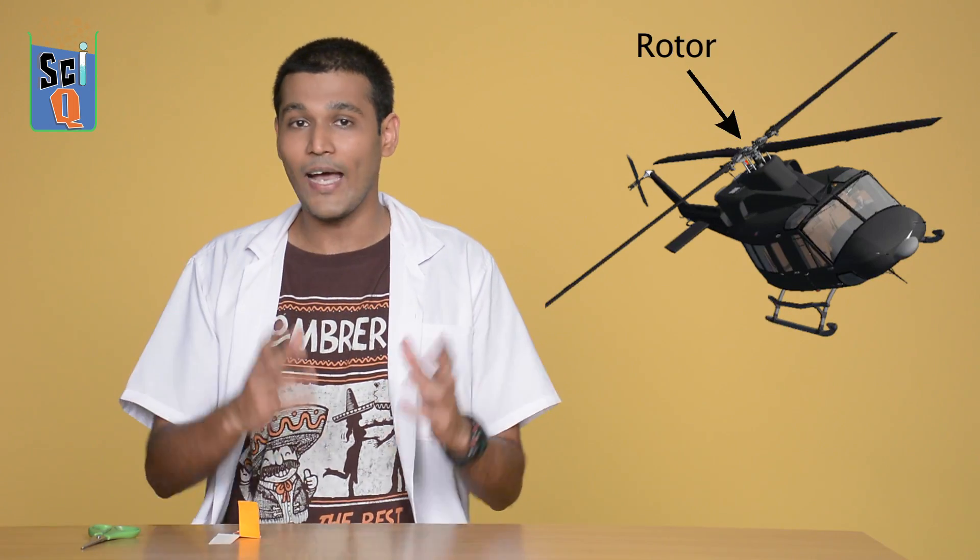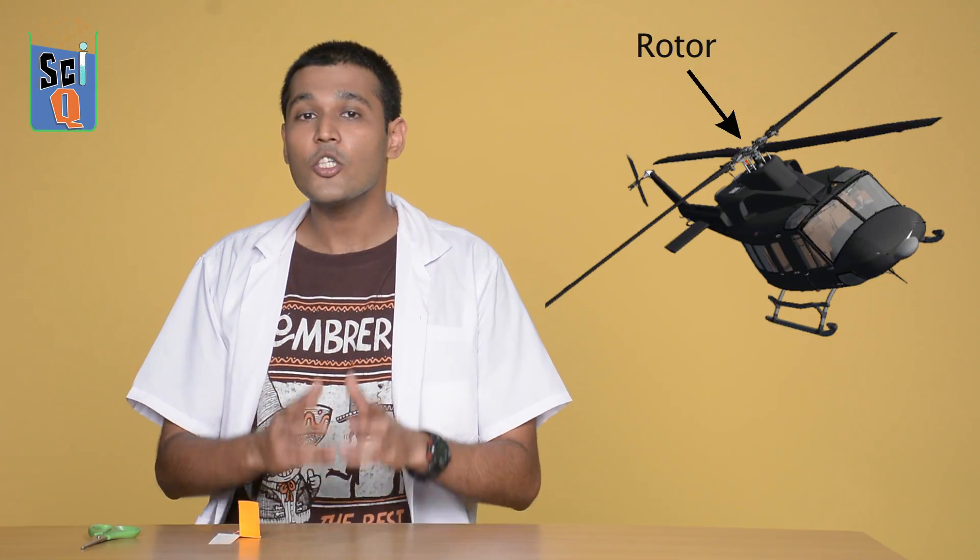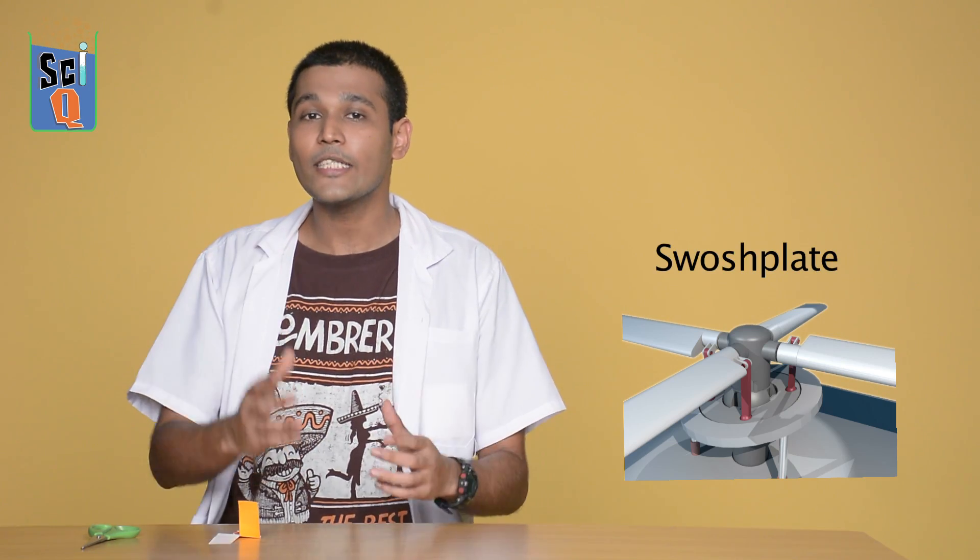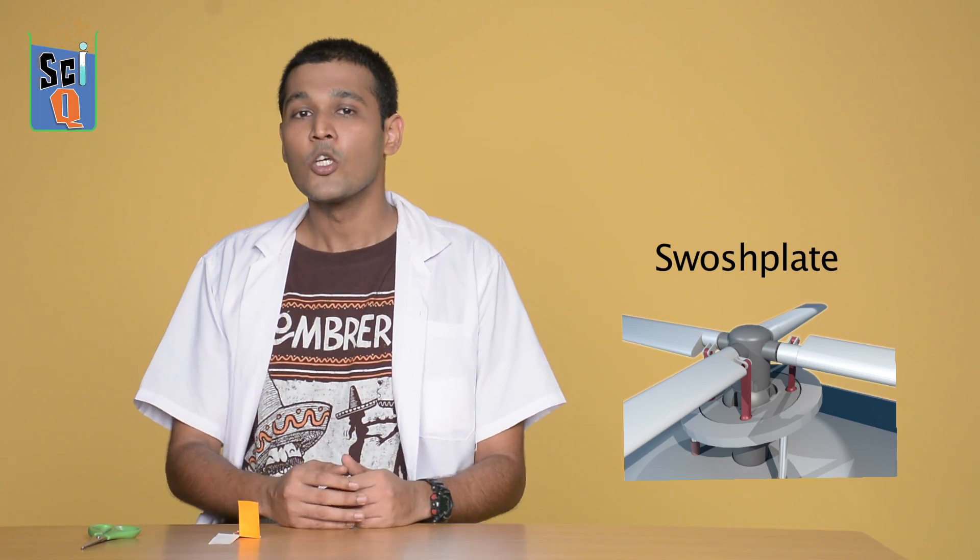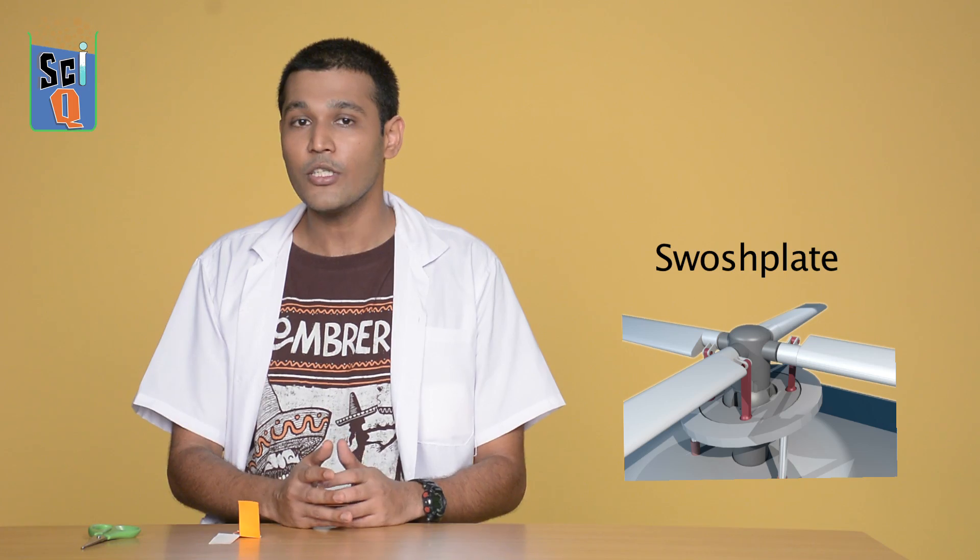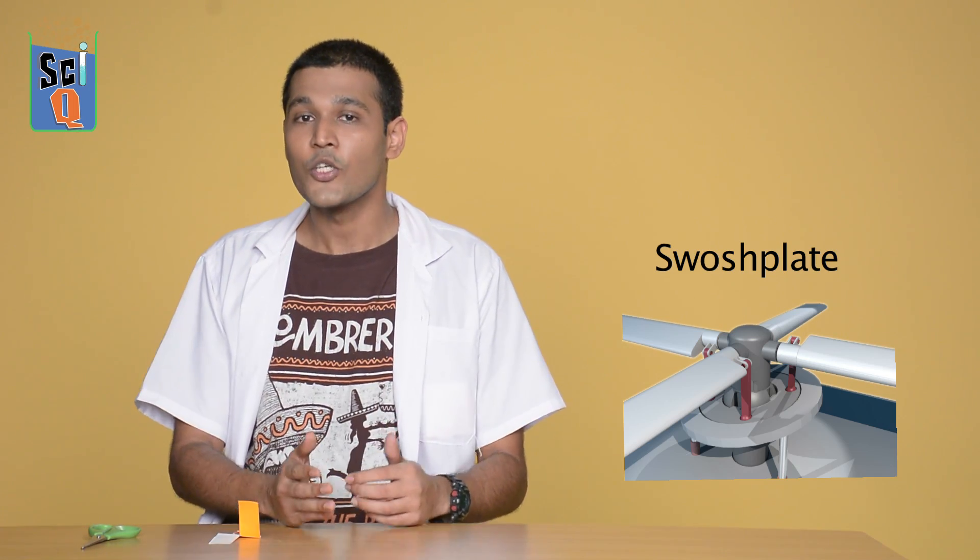This is where an interesting component that makes up the main rotor or the big fan comes into play. It's called the swash plate. And the swash plate is part of the rotor assembly and is connected to levers inside the cockpit. So when you move the lever in one direction, the swash plate tilts the rotor. So the air is pushed at an angle. If the entire rotor leans forward, the helicopter moves forward. It's as simple as that.